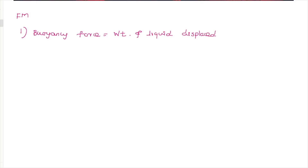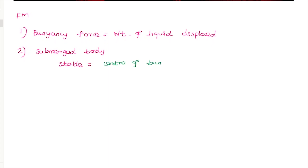The first question is about Fluid Mechanics. Buoyancy force equals the weight of the liquid displaced — this is the Archimedes principle, a direct question. The second question is about a submerged body stability condition: the center of buoyancy must be above the center of gravity. This is a direct question.